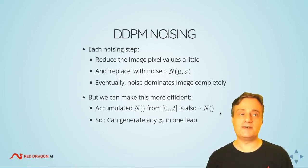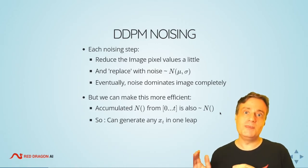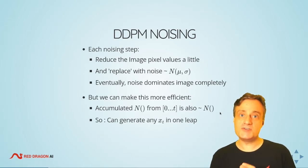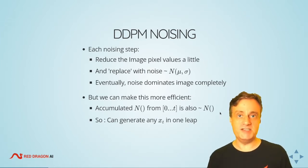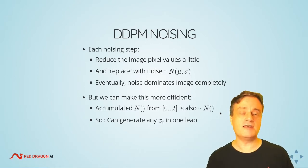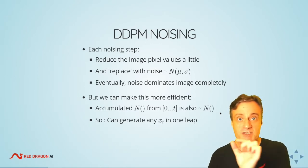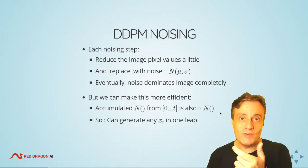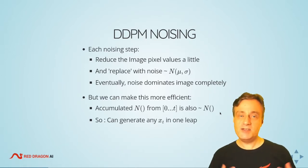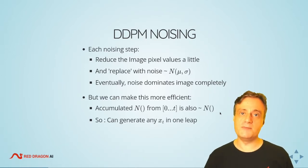We can compute any transition we want and train the model to know how to do all the transitions. Within a batch, you'd want to have lots of different images at different time steps so it learns about the distribution of everything rather than one image at every time step — you want to mix things in a batch.